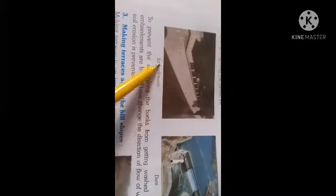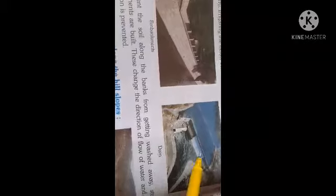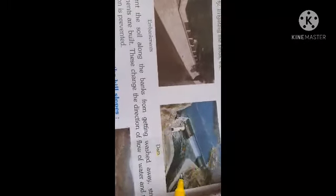I have told you that we will discuss more about embankments. Dams are made so that the flow of water can stop, because the pressure of water is so much that the soil can be washed away. This is why dams are built - so the flow of water can be controlled and the soil can be protected.